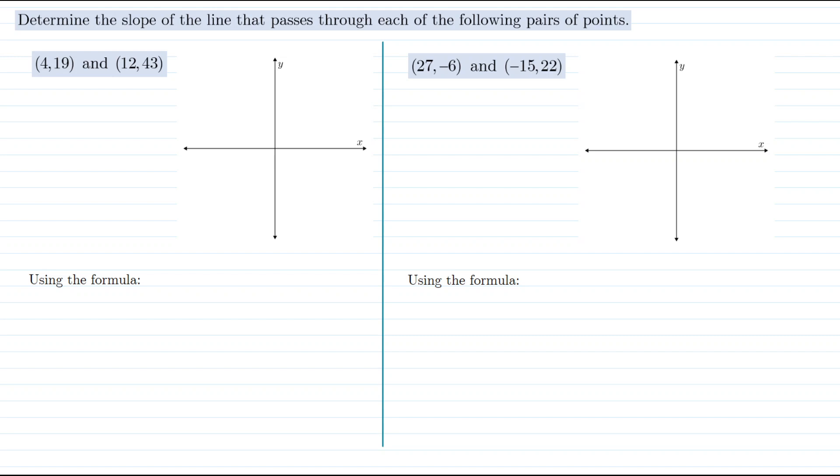Looking at our first example we have the points (4,19) and (12,43). We need to find the slope of the line that passes through those two points. One approach we could take is to draw a rough sketch of the graph. The point (4,19) might be here and the point (12,43) maybe up here. It doesn't need to be accurate, we just want a sketch to get an idea of where those points are.